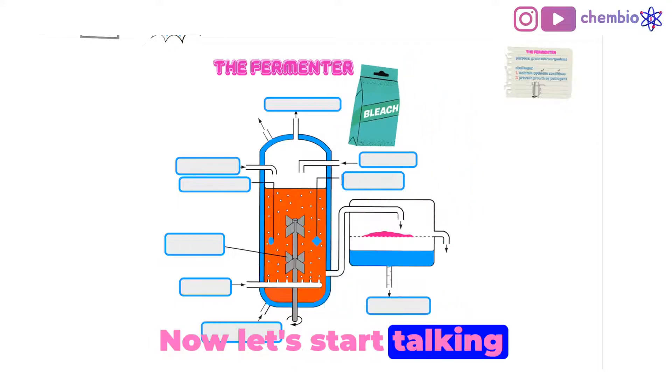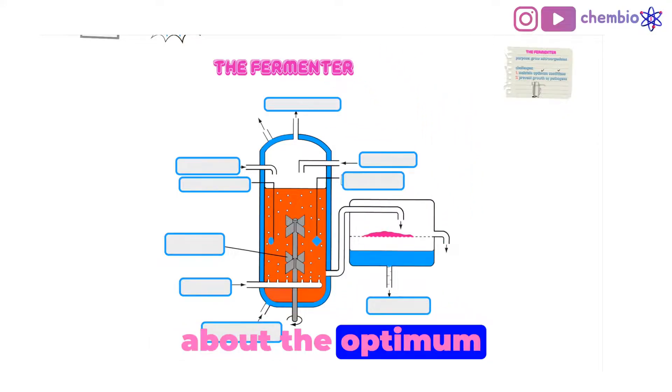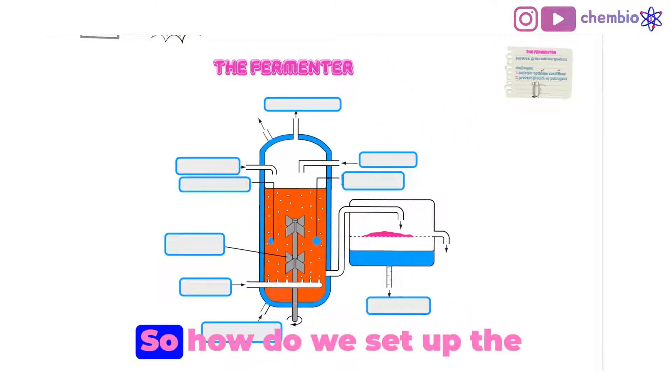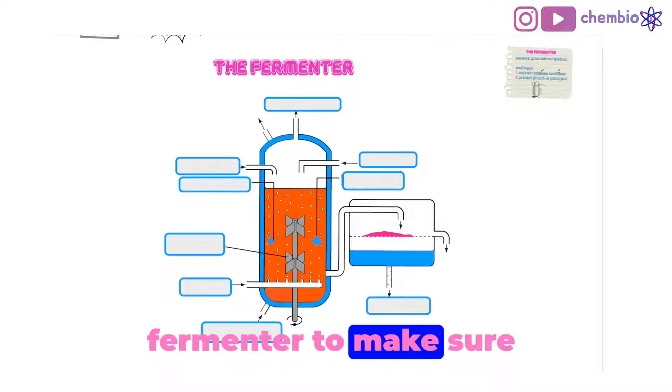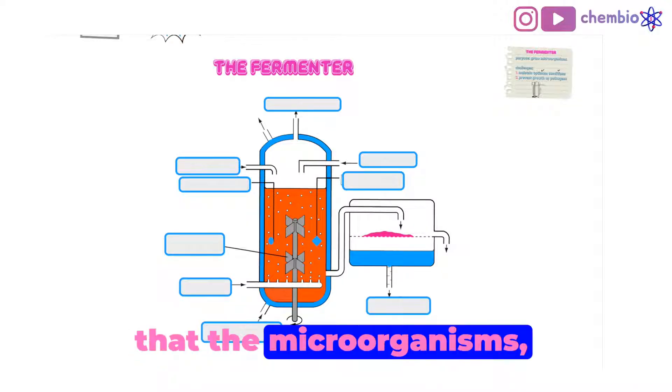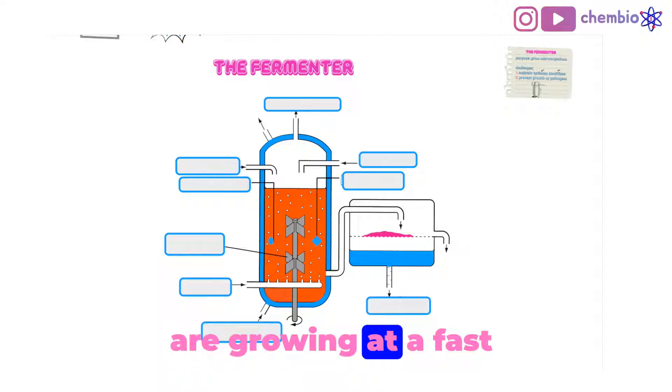Now, let's start talking about the optimum conditions inside the fermenter. How do we set up the fermenter to make sure that the microorganisms, the useful ones, are growing at a fast rate? Let's start with the inlets here. I have two inlets.